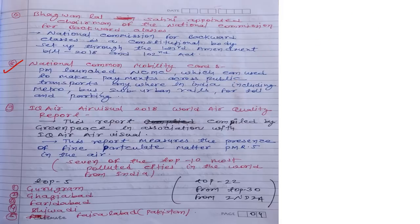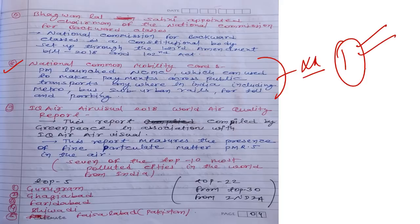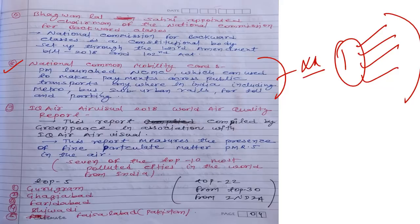Eighth current affair: National Common Mobility Card — launched by Prime Minister Narendra Modi. With a single card, you can make payments for metro, parking, and toll plazas. Previously, different cards were needed for different transportation modes; now one card works for all public transportation.